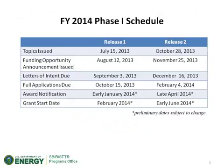Here is the Phase 1 schedule for both Release 1 and Release 2, very similar to last year. For those new to the program, we release topics about a month before the funding opportunity announcement. There is a mandatory letter of intent requirement — we're just looking for an abstract from your full application. Applications for Release 1 will be due October 15th, and you can expect to hear from us in early January as to whether you were recommended for award. Your grant would start in February.